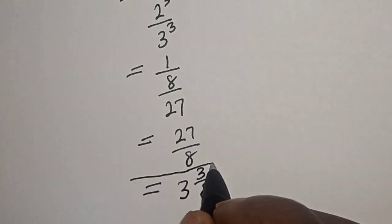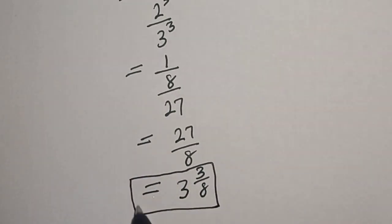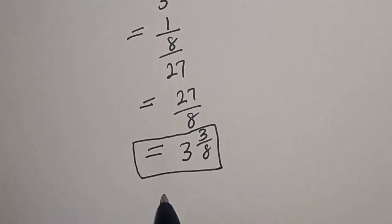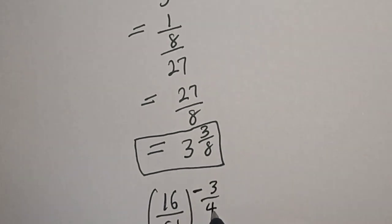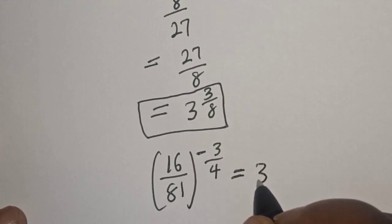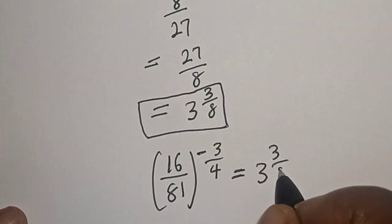And that is our final answer. Therefore, 16 divided by 81 raised to power minus 3 over 4 is equal to 3 and 3 over 8.